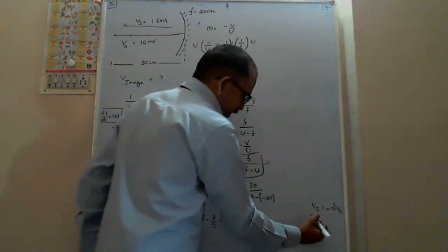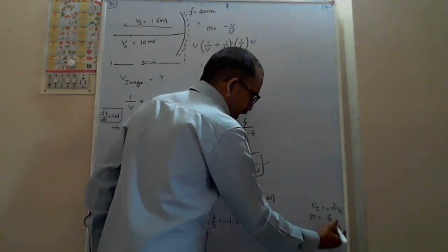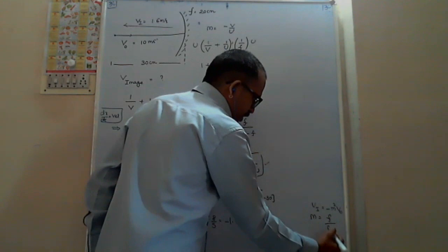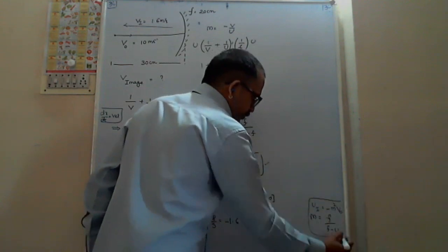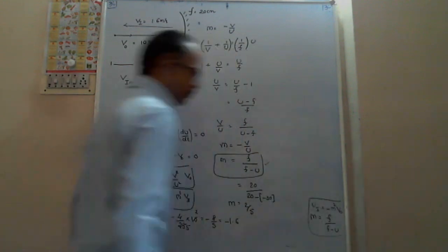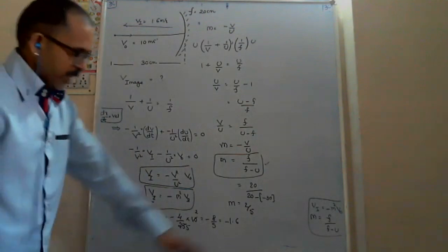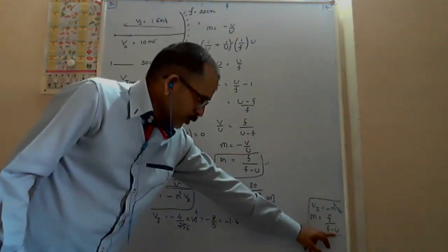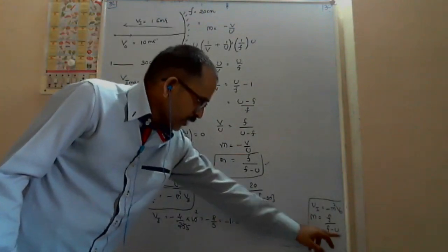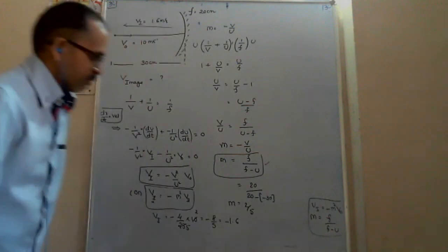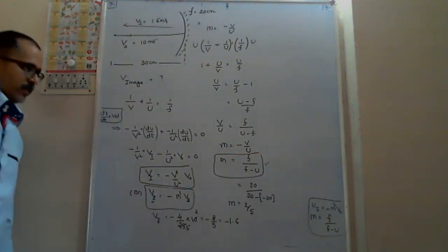Here are two shortcuts: Number 1 — velocity of image equals minus m² into v_object, when the object is moving parallel to the principal axis. Number 2 — magnification in terms of focal length and object distance equals f/(f minus u). Keep in mind we have to substitute sign conventions.